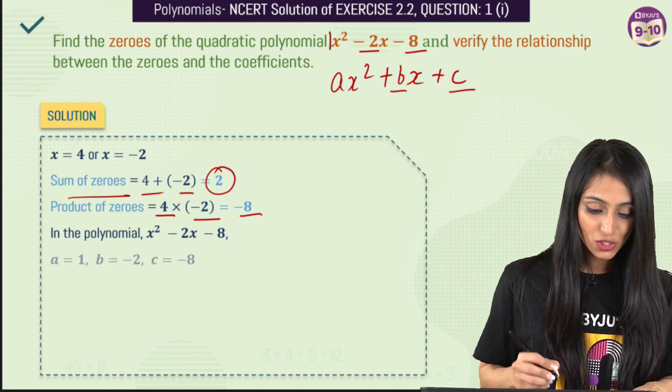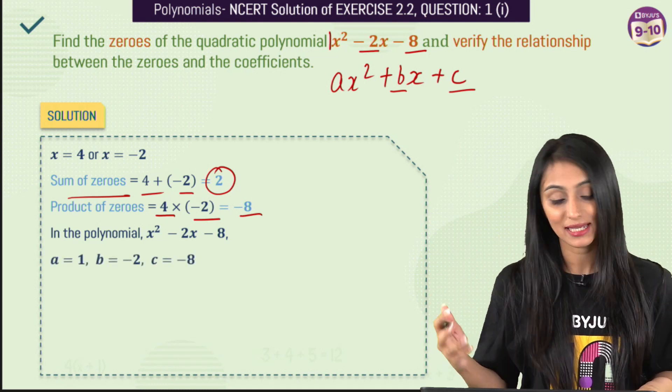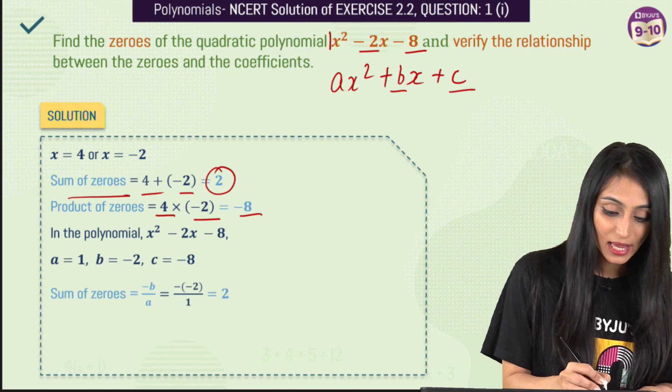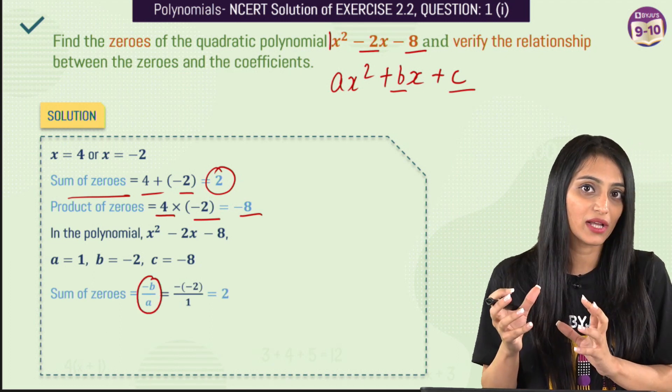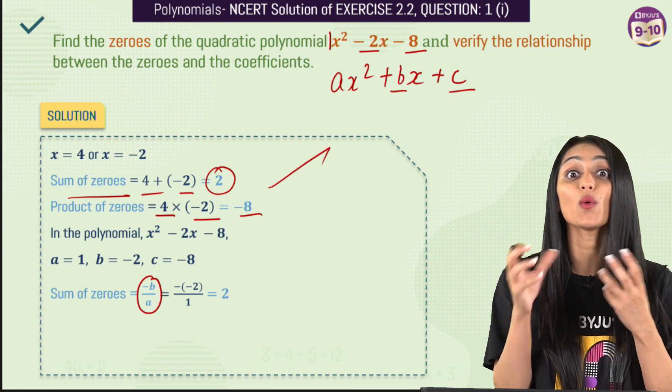We are just comparing it. So these are the values for a, b and c. Now all we have to do is, we have to check for sum of zeros which is minus b by a. That's how we verify the relationship between the zeros and the coefficients.